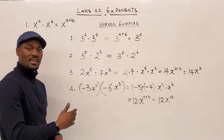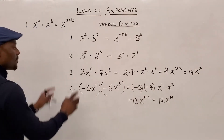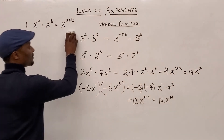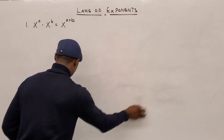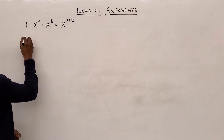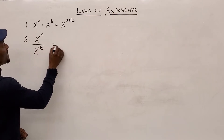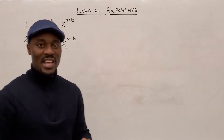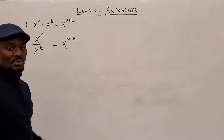If you need to go over this, pause the video at this point because I'm going to erase it and introduce the second law. The second law that we're going to apply is the law that applies to division: x to the a divided by x to the b equals x to the a minus b. You could almost predict that — whenever you're doing division it's the opposite of multiplication, so when you're adding in multiplication, you'll be subtracting in division.